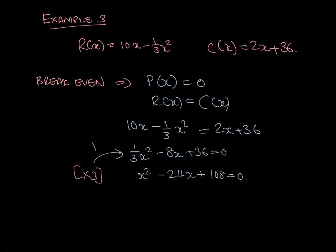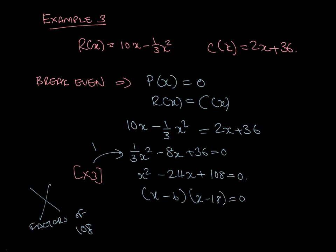This is a quadratic equation I can solve using the quadratic formula, or I can find the factors of 108. The two factors of 108 that give me negative 24 are x minus 6 and x minus 18. So x equals 6 or x equals 18 — and that 'or' is important.